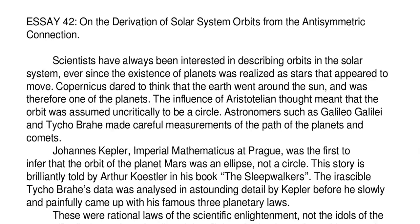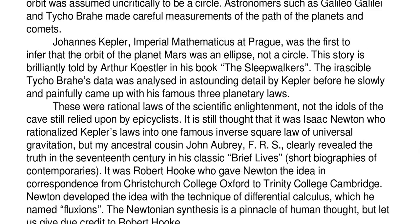Copernicus dared to think that the Earth went around the Sun and was therefore one of the planets. The influence of Aristotelian thought meant that the orbit was assumed uncritically to be a circle. Astronomers such as Galileo Galilei and Tycho Brahe made careful measurements of the path of the planets and comets. Johannes Kepler, Imperial Mathematicus at Prague, was the first to infer that the orbit of the planet Mars was an ellipse, not a circle.